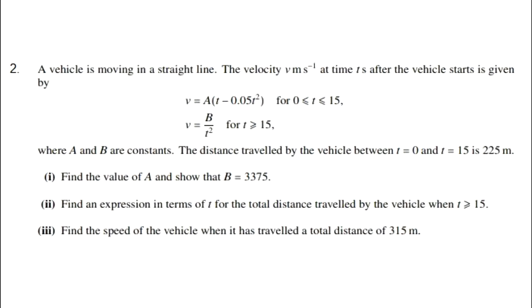First part: find the value of A and show that B = 3375. Second part: find an expression in terms of t for the total distance travelled by the vehicle when t ≥ 15. Third part: find the speed of the vehicle when it has travelled a total distance of 315 meters.